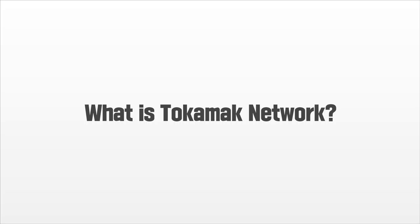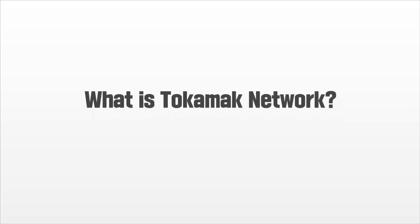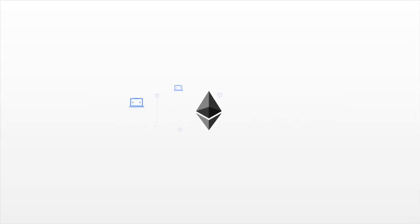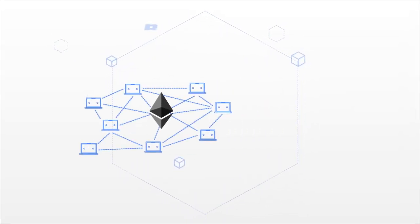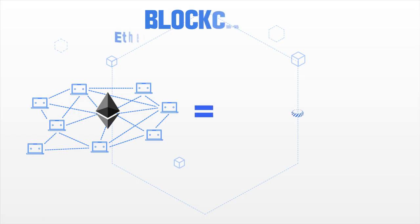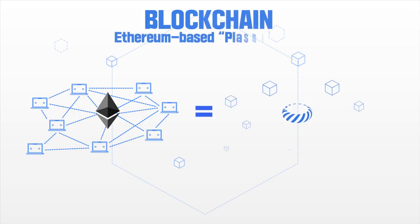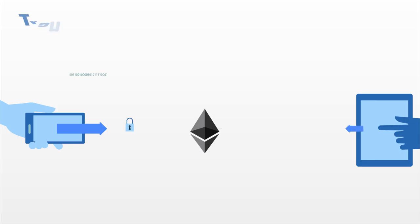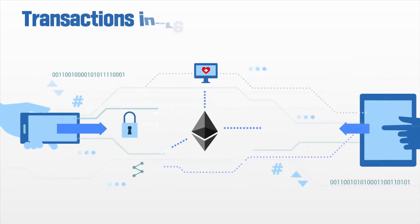What is Tokamak Network? Tokamak Network is a decentralized, Turing-complete plasma chain. Tokamak Network connects the Ethereum main blockchain and Ethereum-based plasma chains.